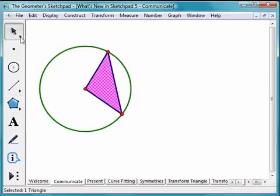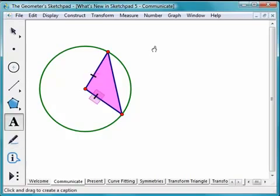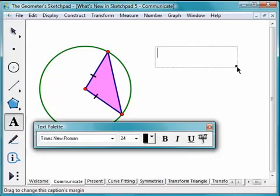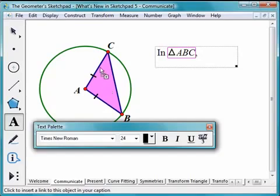Add tick marks to the triangle with the New Marker tool to indicate that two of its sides are congruent. Insert the names of objects directly into your caption simply by clicking them. Sketchpad automatically italicizes the names of geometric objects.